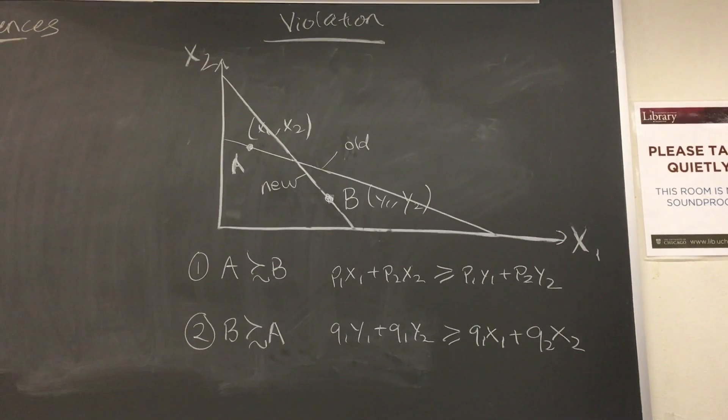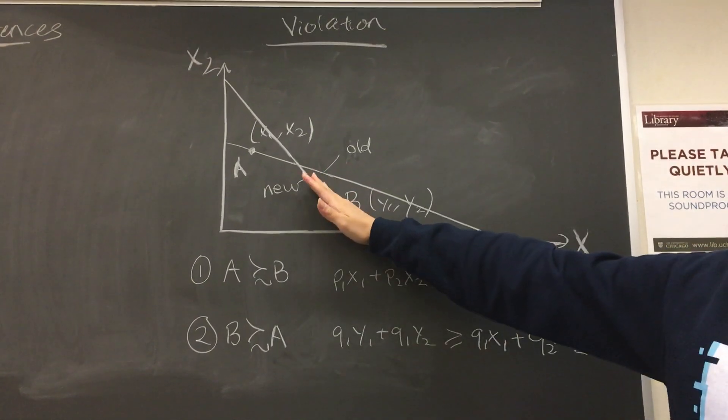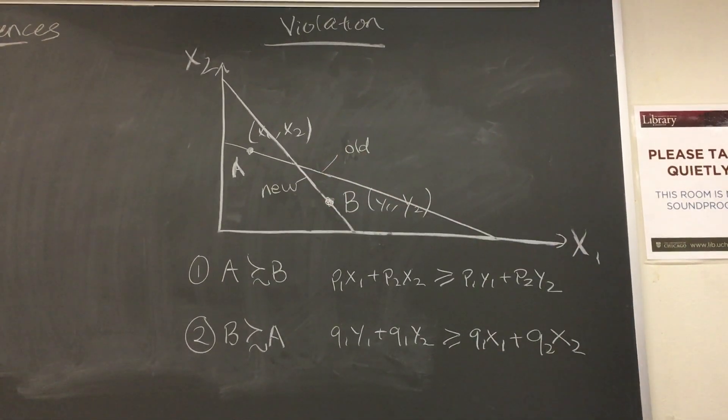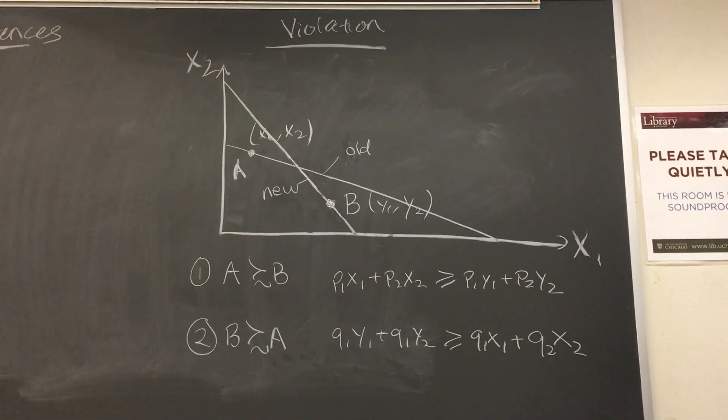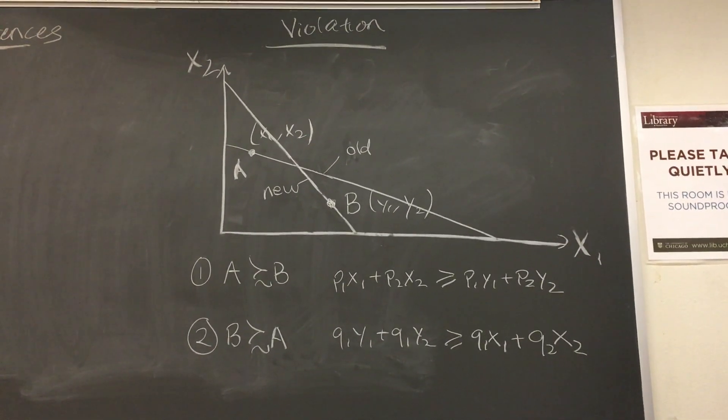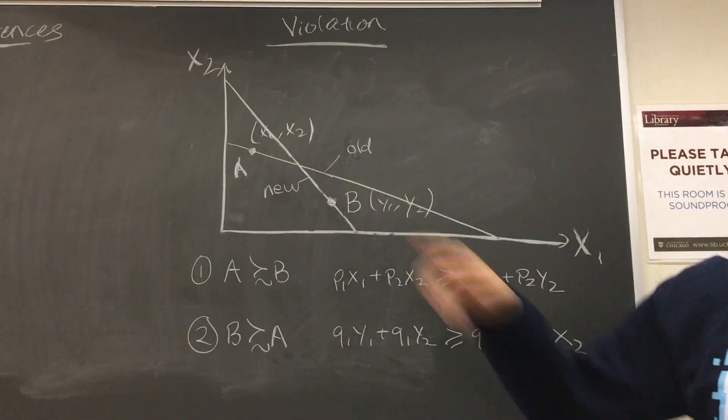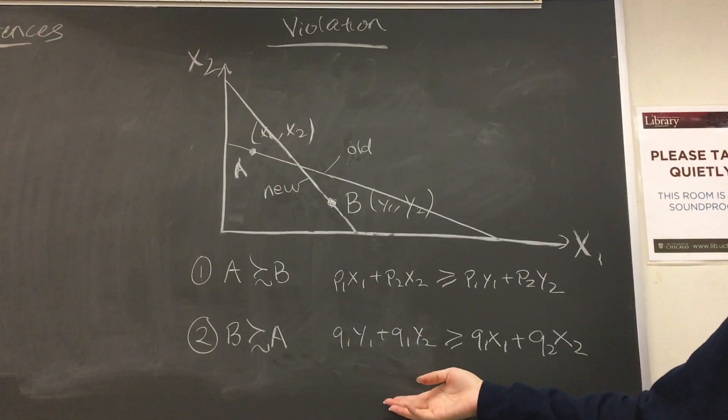When the budget constraint changes, as seen from the new budget constraint line, both bundles A and B are still feasible allocations as they are on or below the budget line. However, this time the consumer chooses bundle B over bundle A, showing that bundle B is revealed preferred to bundle A.